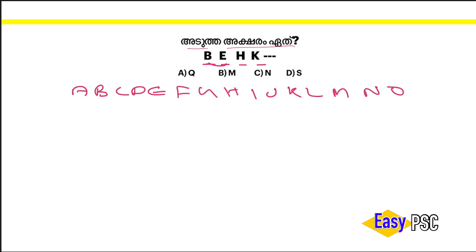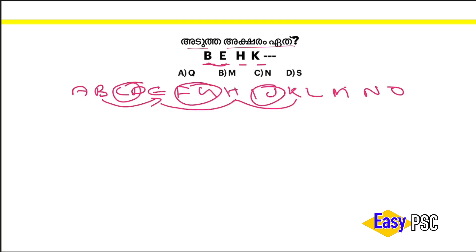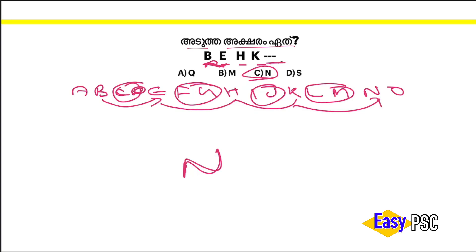B, E, H, K — we will start with A with Z. B and E: 2. E, H, 2H, K, 2K, 2. N, N, C, N, 6, 2A, A, E. C, D, E, F, G, H, I, J, K, M, N — answer.